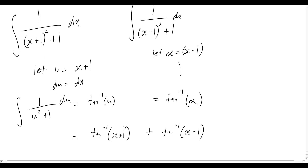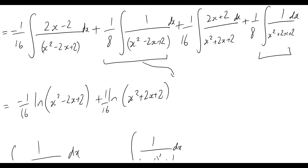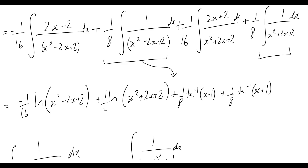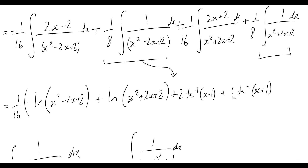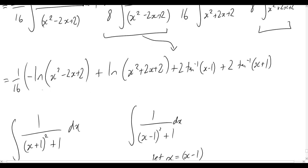Substituting back, we get (1/8) arctan(x minus 1) plus (1/8) arctan(x plus 1). We can factor out (1/16) from everything, giving (1/16) out the front; the logarithm terms remain as before, and the arctan terms become 2 arctan(x minus 1) and 2 arctan(x plus 1). We can also collect the logarithms into a single log of a ratio if preferred.